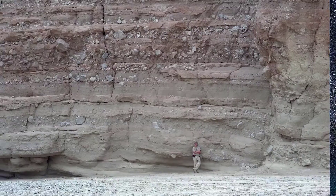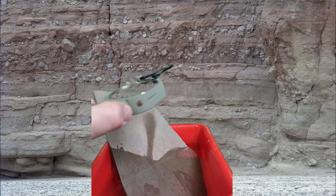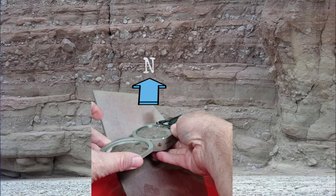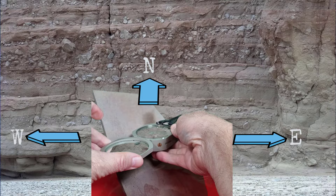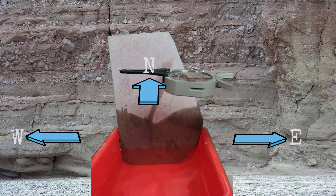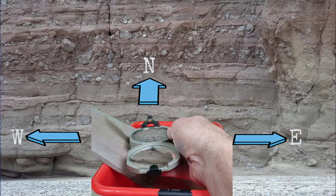So let's test your comprehension. Can you tell me approximately what the strike and dip are in this example, keeping in mind that north is straight ahead, east is to the right, and west is to the left? Pause the video until you've found an answer, and don't forget to write out each answer in its correct format before you press play. Now do the same with this example, and this one.